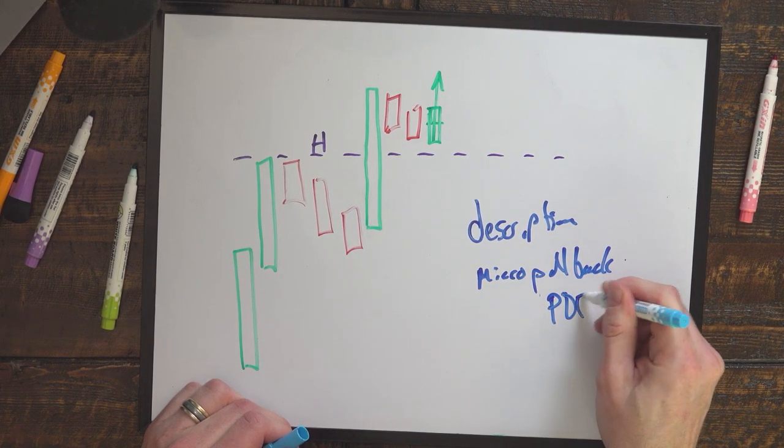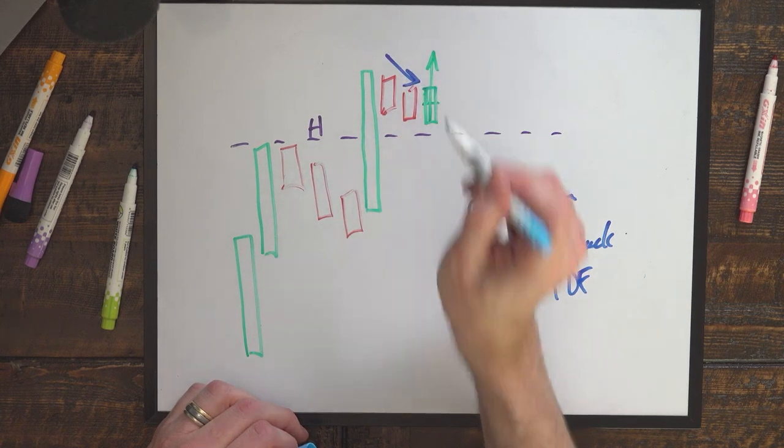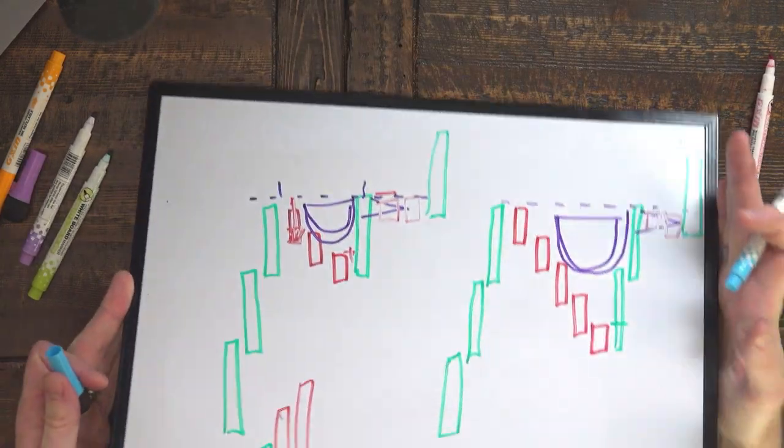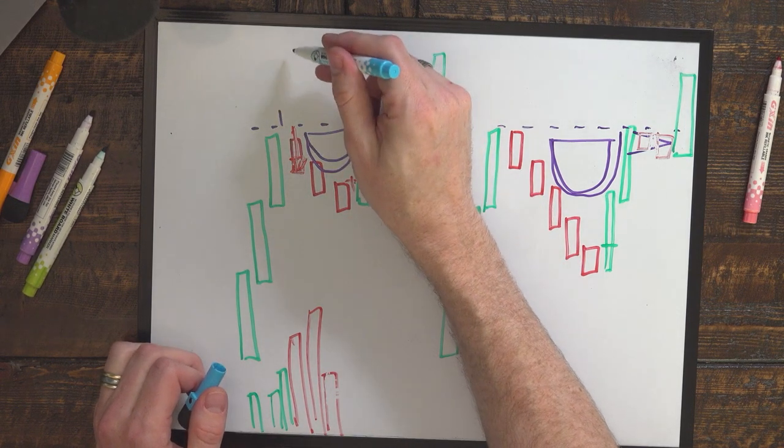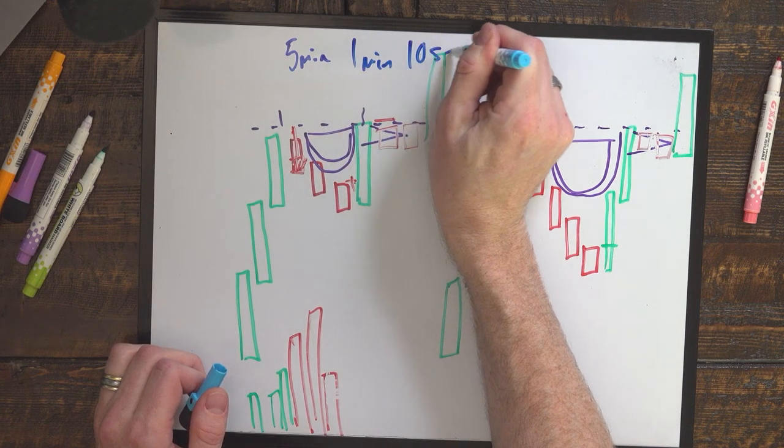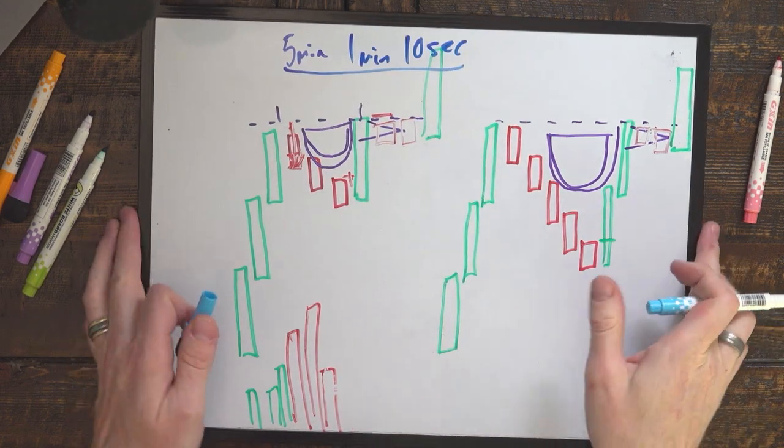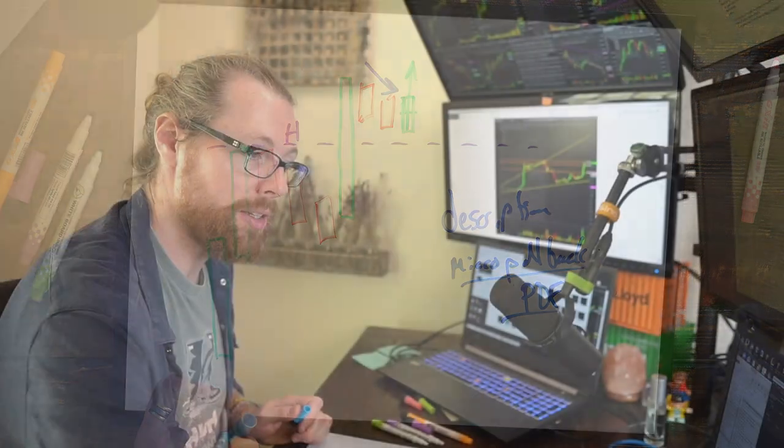That PDF breaks down the strategy of how I trade these little micro pullbacks right here. And this is often in the form of a micro pullback right here. All of this could occur on a five minute, a one minute, or even a 10 second chart. So if you want to learn a little bit more about trading micro pullbacks, check out that PDF right down there in the description. And I hope you guys are enjoying this multi-part series on technical analysis and how to read stock charts.